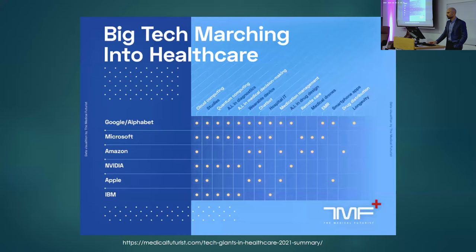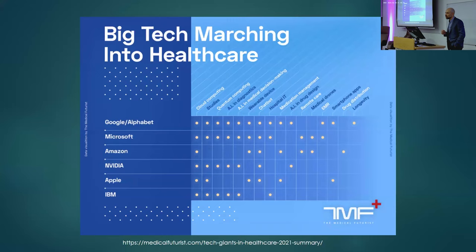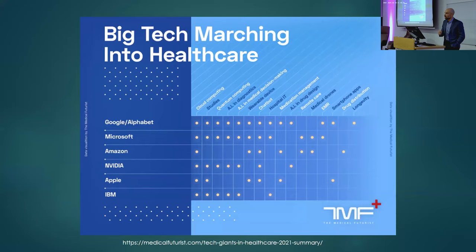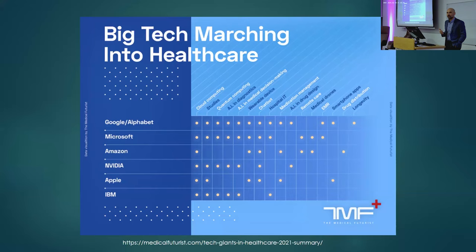Big tech companies are forcing their way into healthcare with the financial power, technical resources, and know-how to transform the sector. Amazon received drug distribution licenses in 10 US states, bought the online pharmacy PillPack, and offers virtual services to its own employees — it is also the number one provider of cloud computing and generative AI applications. Microsoft is a key partner of Epic, one of the largest providers of electronic medical records in the US, and is the second largest cloud provider and a key investor in generative AI.